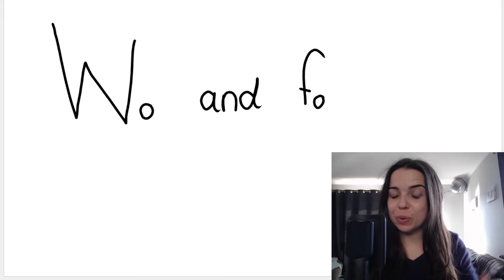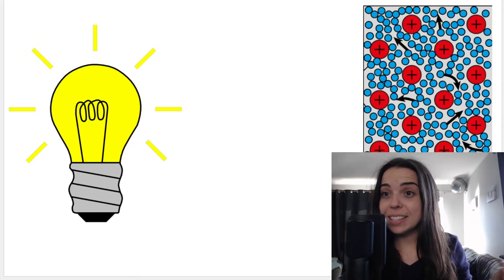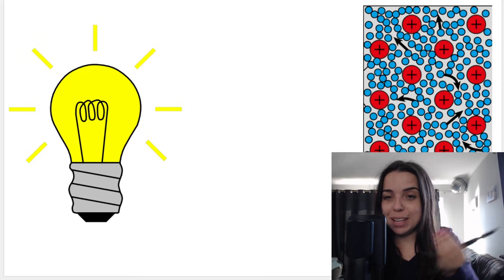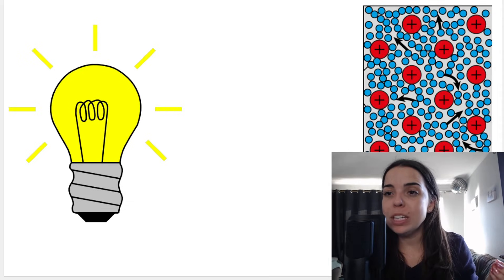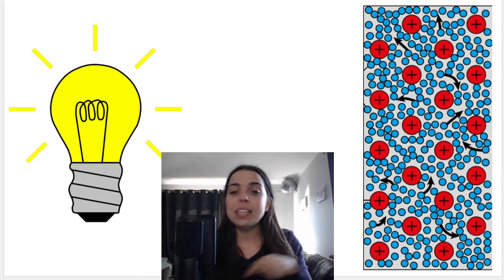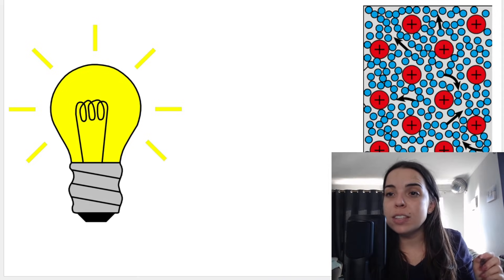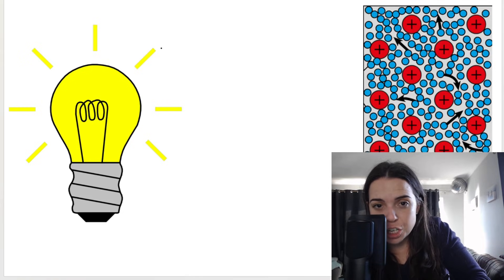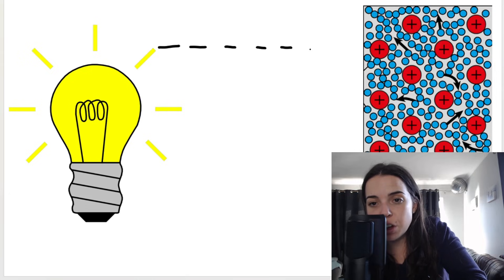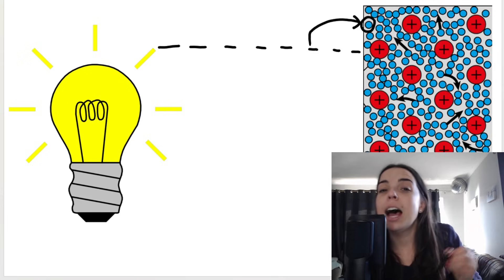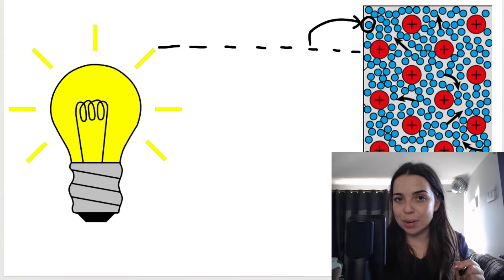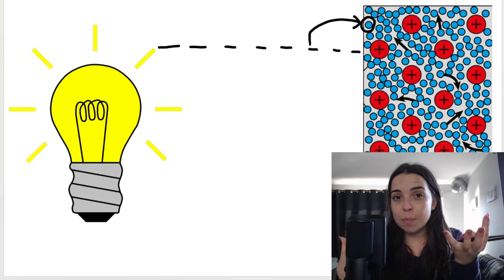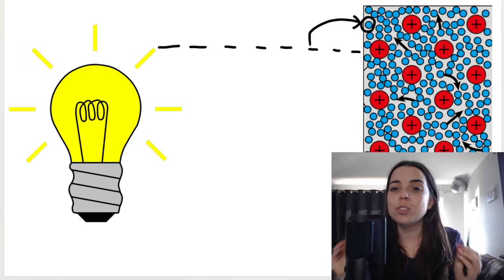Let's speak about work function and threshold frequency in the photoelectric effect. In the previous lesson, we said that when light shines on a metal surface, electrons may be ejected or emitted from the surface of that metal. We said that light contains photons, and photons are packets of energy found in the light. When that light with the photons shines on the metal, the photons give their energy to the electrons, allowing the electrons to escape from the metal. However, this does not always happen, so in this lesson we'll discuss when it does happen versus when it does not happen.